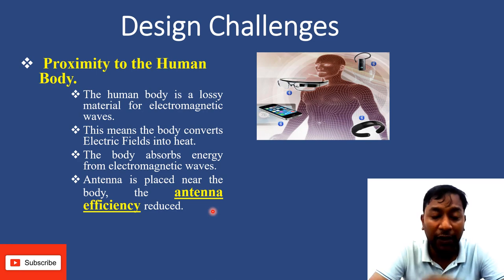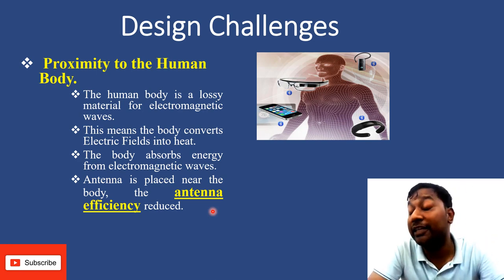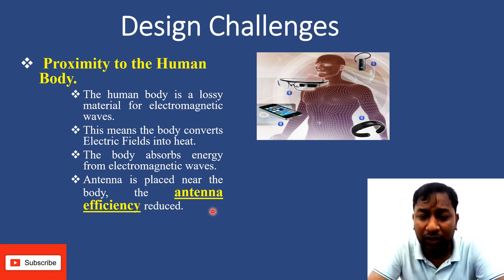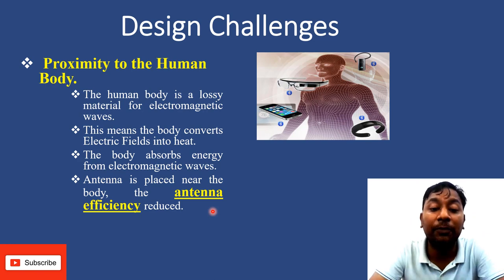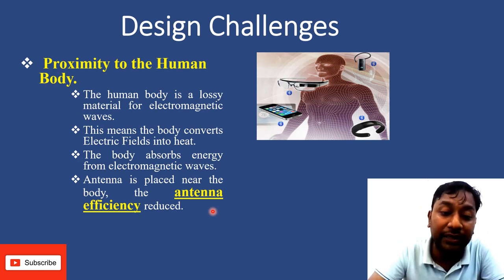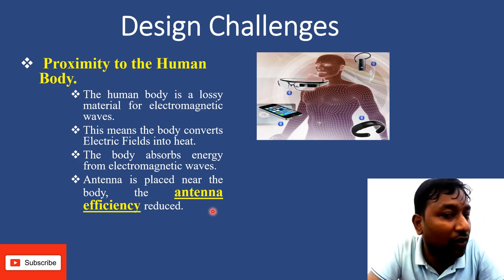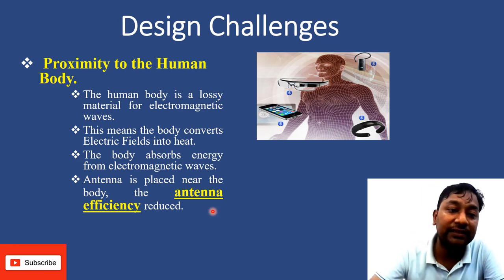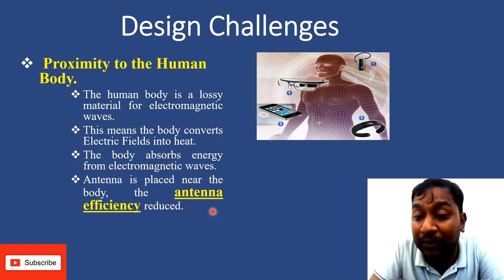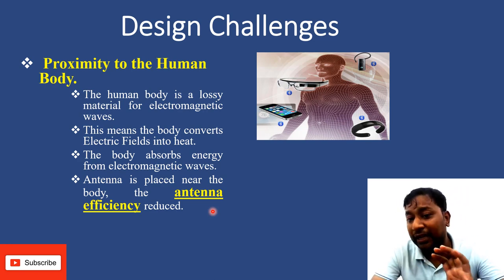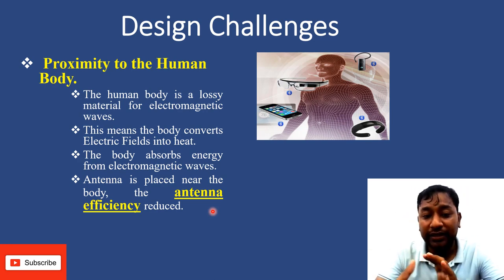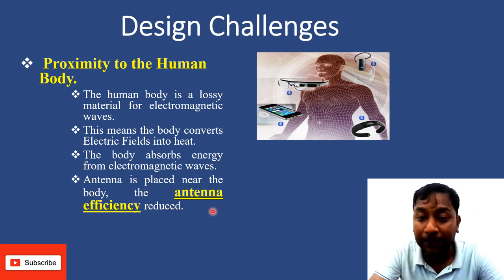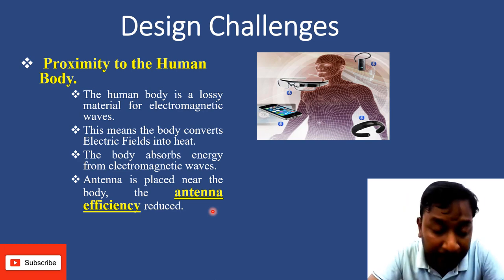Now, what are the design challenges — whether military or consumer applications? The first challenge is proximity to the human body. The human body is a lossy material for electromagnetic waves; it converts electromagnetic energy into heat. So when an antenna is placed near the body, the antenna efficiency is reduced. Our body tends to reduce the antenna's efficiency, causing the antenna to not work properly in some cases.